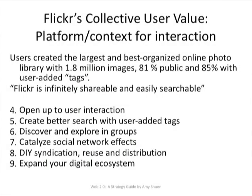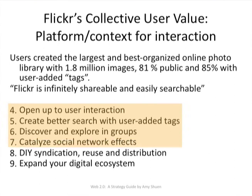There are also six ways in which Flickr, through its natural usage, opened itself up to collective user value. Those six ways are explained in more detail in the chapter, but I'll name them here. The first is that they opened up to user interaction. They created better search using user-added tags. They discovered and explored in groups. They catalyzed their social network effects. They used do-it-yourself syndication and reuse and distribution. And finally, they expanded their digital ecosystem. These are six ways in which Flickr created collective user value important to their business and ones that could be implemented by any company, traditional or online.